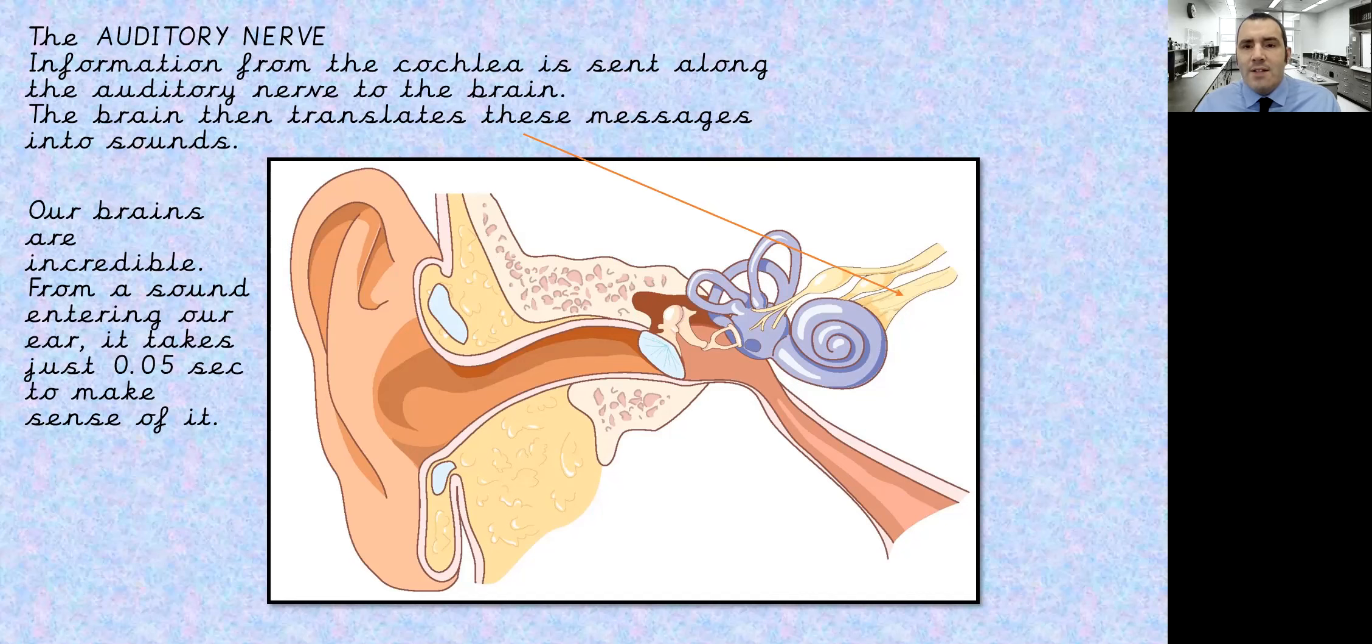To get an idea of how quick that is, if you've got a stopwatch or you can find one on Google, there's a good one on the Google homepage if you just search for stopwatch. Try and click quick enough on your mouse for 0.05 of a second. That gives you an idea of how quickly that sound travels, gets into your ear, and you're hearing it as someone talking, or a drum being hit, or a dog barking, or whatever the source of that sound might have been.